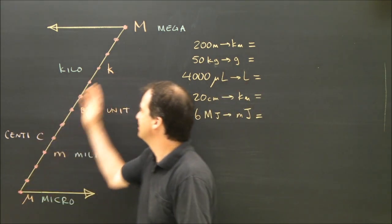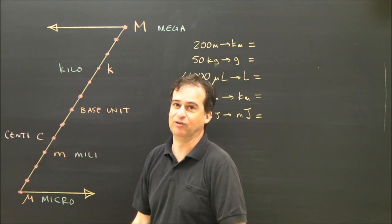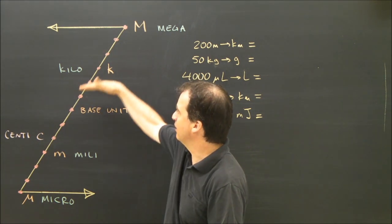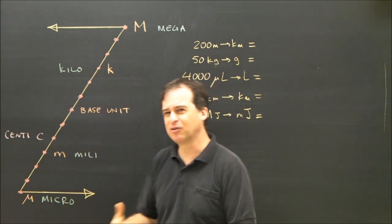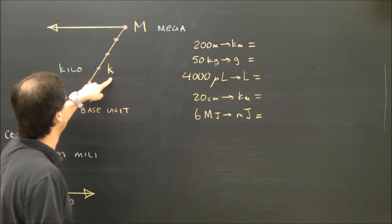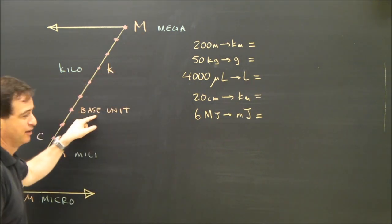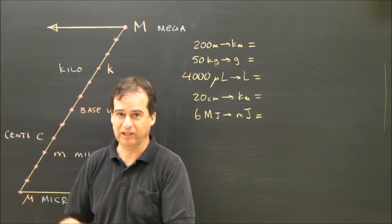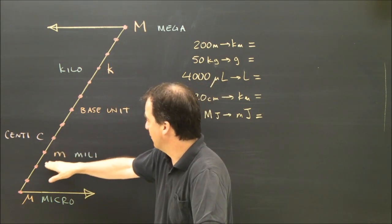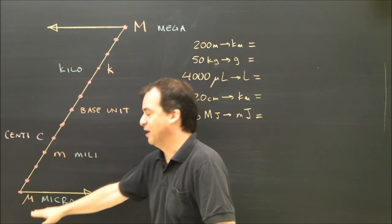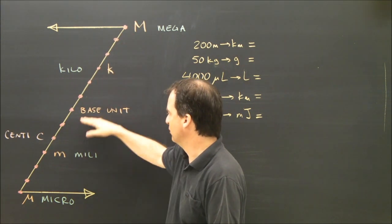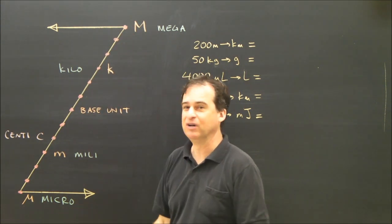So that means we can have one simple method to do that. It's divided up into many different names, but the important ones are these: Mega, kilo, the base unit like grams or liters or joules, then milli and micro. These are the important ones — Mega, kilo, the base unit, milli, and micro.